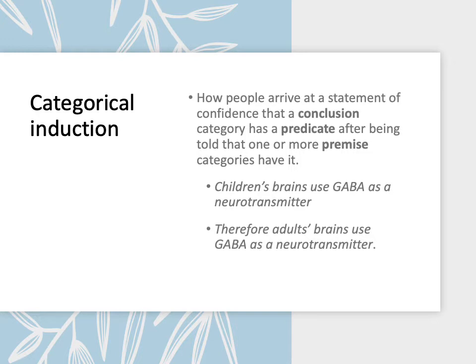The two statements shown below illustrate this. The first is a premise: children's brains use GABA as a neurotransmitter. The predicate here is GABA, and children's brains are the concept we're talking about. If you assume this is true, how likely is it that the conclusion — adults' brains use GABA as a neurotransmitter — is also true? Most of us assume that children's and adult brains, although different because they develop, are chemically in the same category. So we're confident that what's true of brains in childhood is also true in adulthood. That's an example of categorical induction.